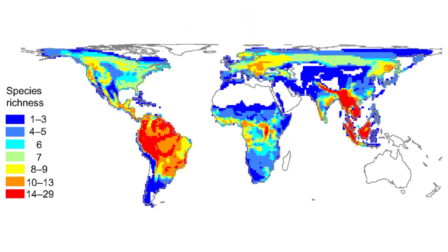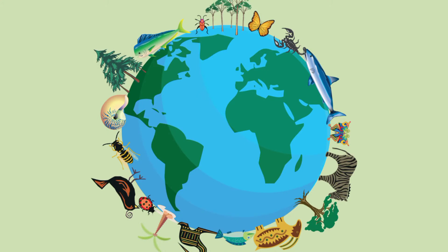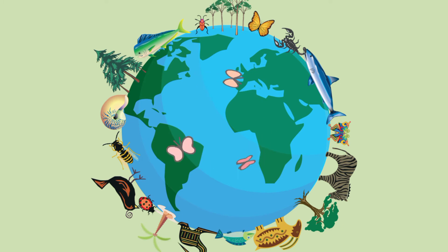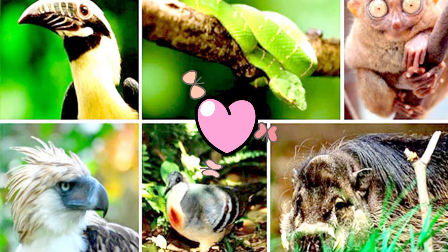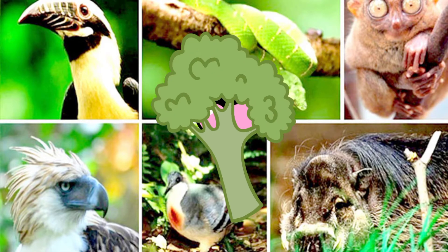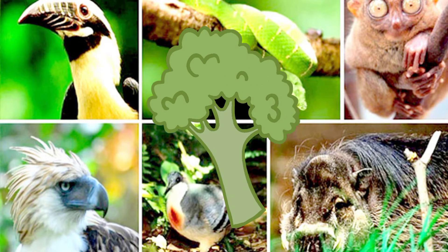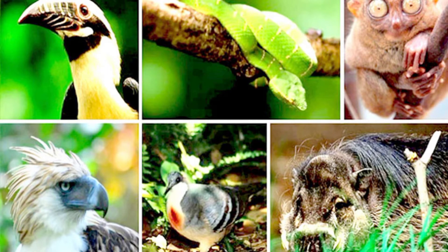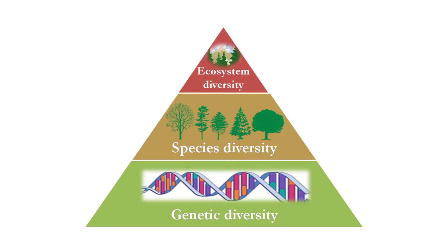Biodiversity is commonly understood as the number of species on earth, sometimes more exactly termed global species richness. It refers to all the variety of life that can be found on earth, as well as the communities they form and the habitats in which they live. Biodiversity also encompasses the genes they contain and the interactions that take place.